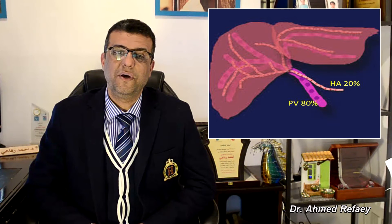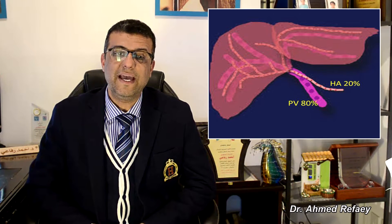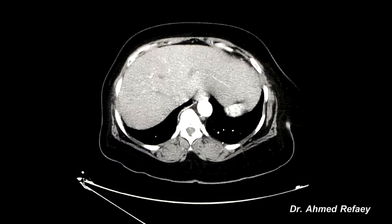Before explaining the meaning of a triphasic study, I have to remind you that the liver has dual blood supply: 80% of blood supply is coming through the portal vein and 20% through the hepatic artery. A triphasic study is the imaging of the liver in three phases: arterial phase, porto venous phase, and delayed phase.